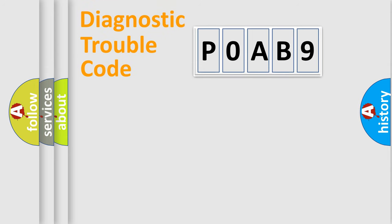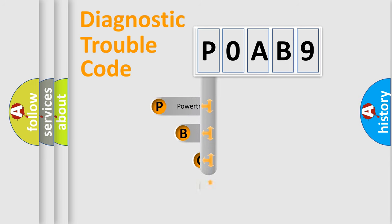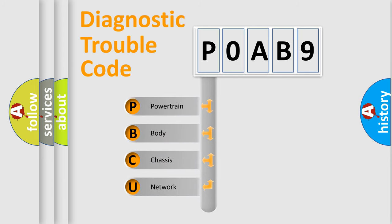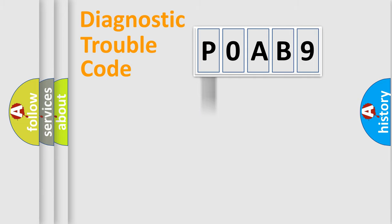First, let's look at the history of diagnostic fault code composition according to the OBD2 protocol, which is unified for all automakers since 2000. We divide the electric system of an automobile into four basic units: Powertrain, Body, Chassis, and Network. This distribution is defined in the first character of the code.